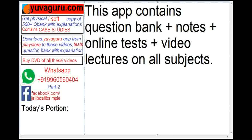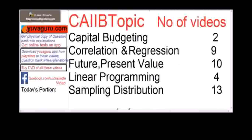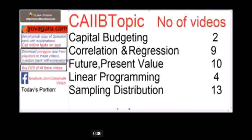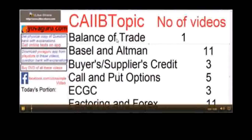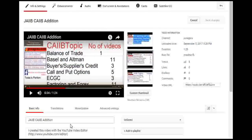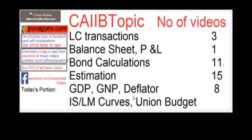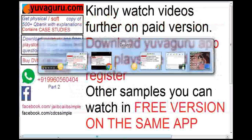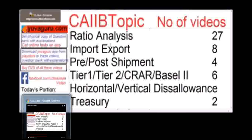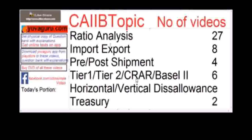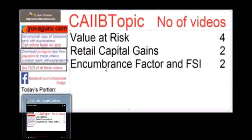This app contains question banks, notes, online tests, video lectures, and news. For CIB, topics include Capital Budgeting, Correlation, Future and Present Values, Linear Programming, Sampling Distribution, Balance of Trade, Buyers Credit, Suppliers Credit, Call and Put Options, ECGC, Factoring, LC Transactions, Balance Sheets, P&L, Bond Calculations, Estimation, GDP, GNP, Deflator, IS-LM Curves, Union Budget, Keynes' Theory, Ratio Analysis, Import-Export, Pre-Import Shipment, Tier 1 and Tier 2 Capital, CRAR, Basel, Horizontal and Vertical Disallowances, Value at Risk, and Retail Capital Gains.